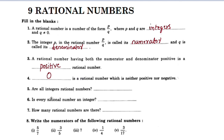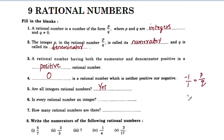Are all integers rational numbers? Yes, all integers are rational numbers. For example, negative one is a rational number — we can write it using the p by q formula. Zero is also a rational number.